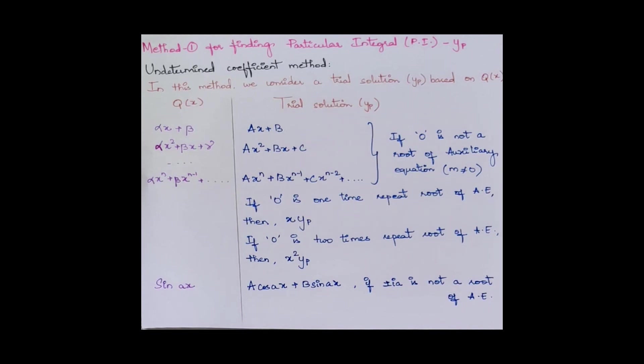There are two methods. The first one is the undetermined coefficients method and the second one is the variation of parameters method.